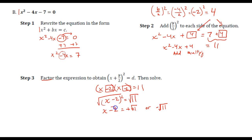We'll have x minus 2 equals positive square root of 11 or negative square root of 11. The opposite of subtracting 2 is adding 2, so we're going to add 2 to both sides.